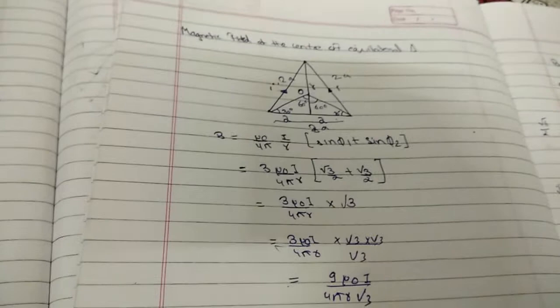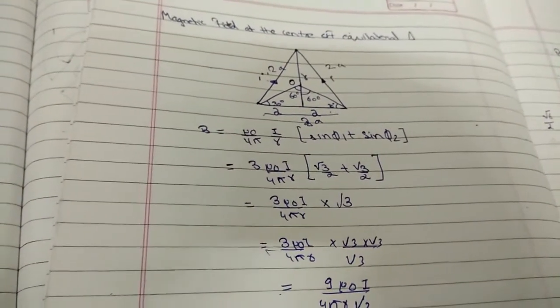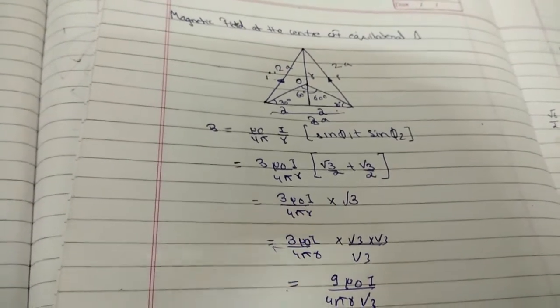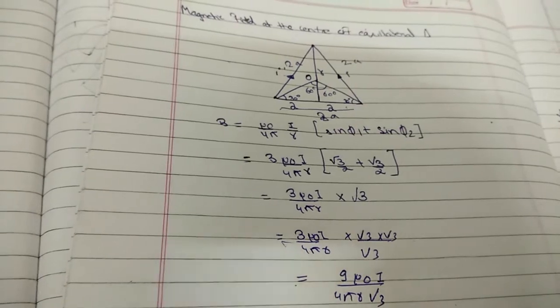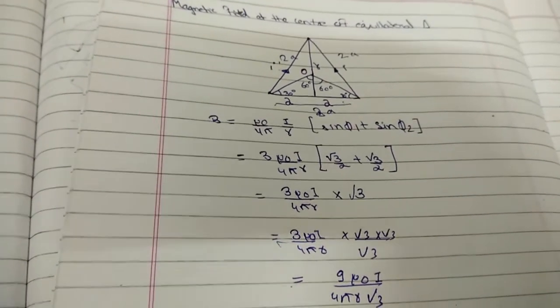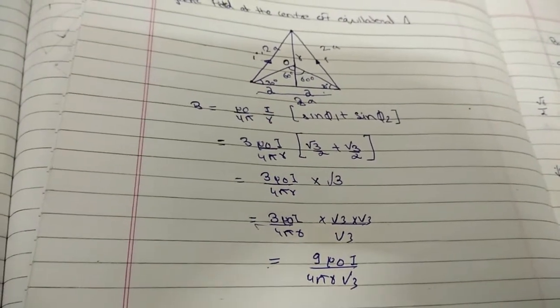This gives us 3μ₀i/4πr into √3. By solving the equation, we get 3μ₀i√3/4πr. Multiplying upper by √3 and lower by √3, we get 9μ₀i/4πr√3.